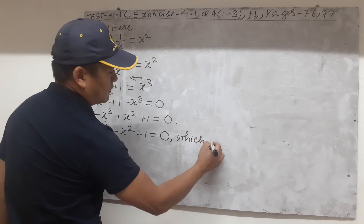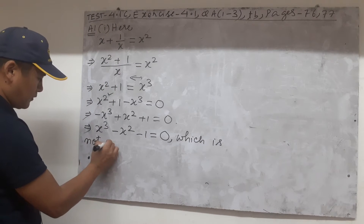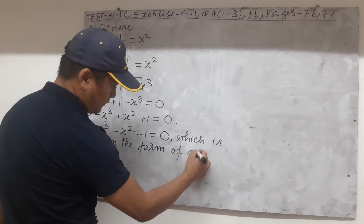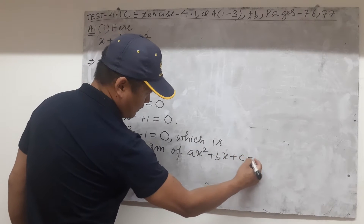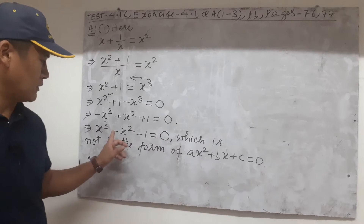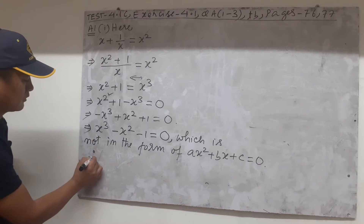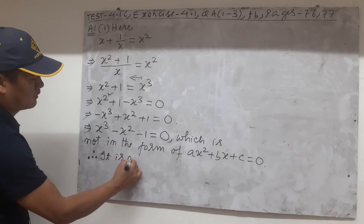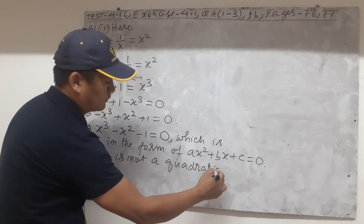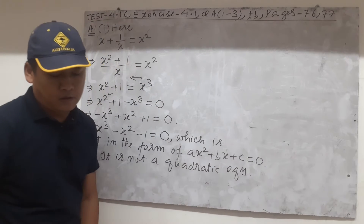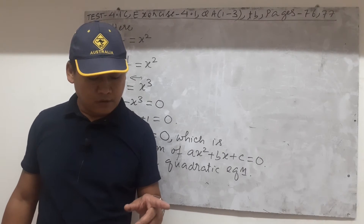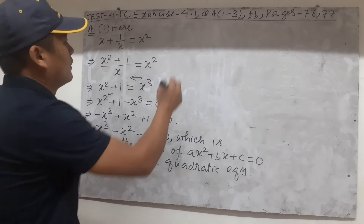This simplest form is not in the general form of ax squared plus bx plus c equal to zero. As you can see, the highest power here is x cubed, not x squared, so it doesn't match. That means this is not a quadratic equation. We need to find which one is the quadratic equation — option 1 is not it, so let us go to option 2.